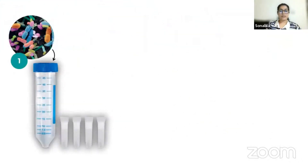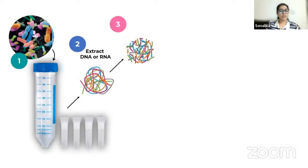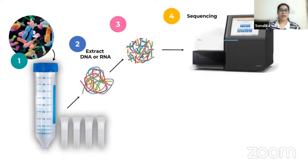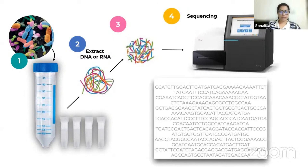Unlike other omics, metagenomics does not study a single organism but the whole community at once — a snapshot of a collection of organisms directly in their natural environment. Since the genomes are so diverse, this is typically accomplished by sequencing a specific marker portion of the genome instead of all the genomic material present in a given sample.